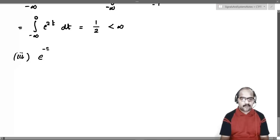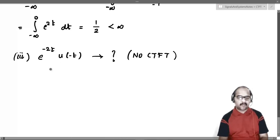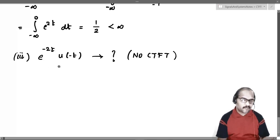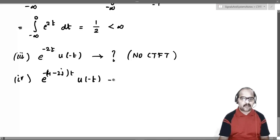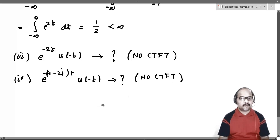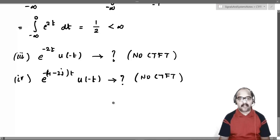Third example: e^(-2t)·u(-t) — this will not have a Fourier transform. Fourth example: e^((-4-2j)t)·u(-t) — this signal also will not have a Fourier transform. I leave it as homework to check whether these two signals are absolutely integrable. As stated, they should not be absolutely integrable, which is why they have no Fourier transform. Please verify this.